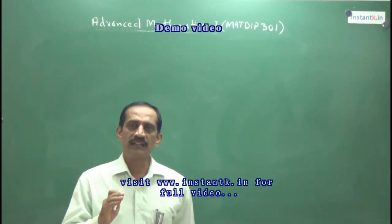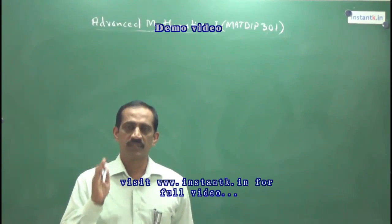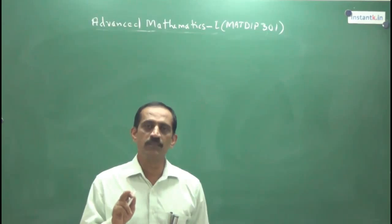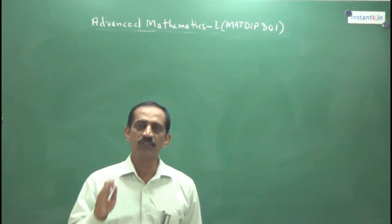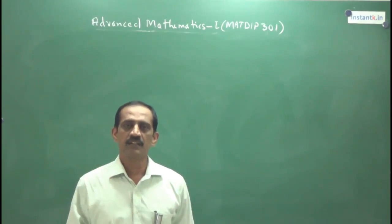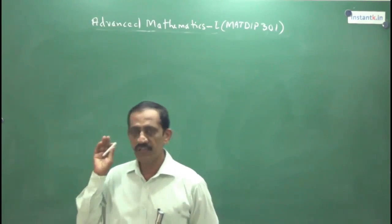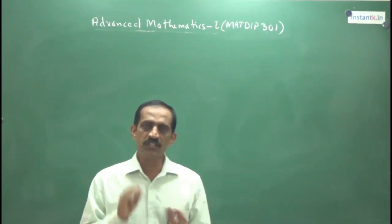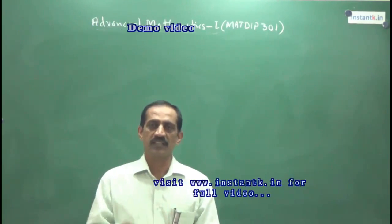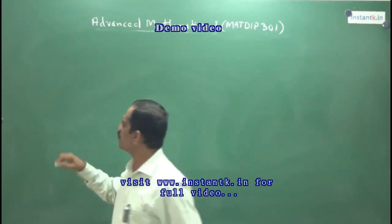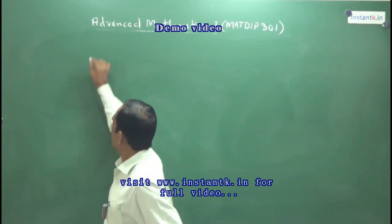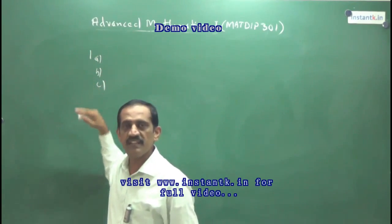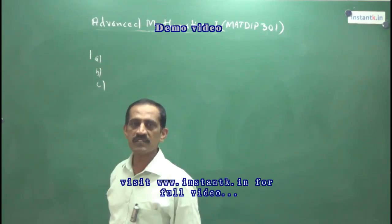The question paper is for 100 marks. Eight questions will be asked, and each question carries 20 marks. In each question, there will be 3 subdivisions — A, B, C — or sometimes 4 subdivisions: A, B, C, D.